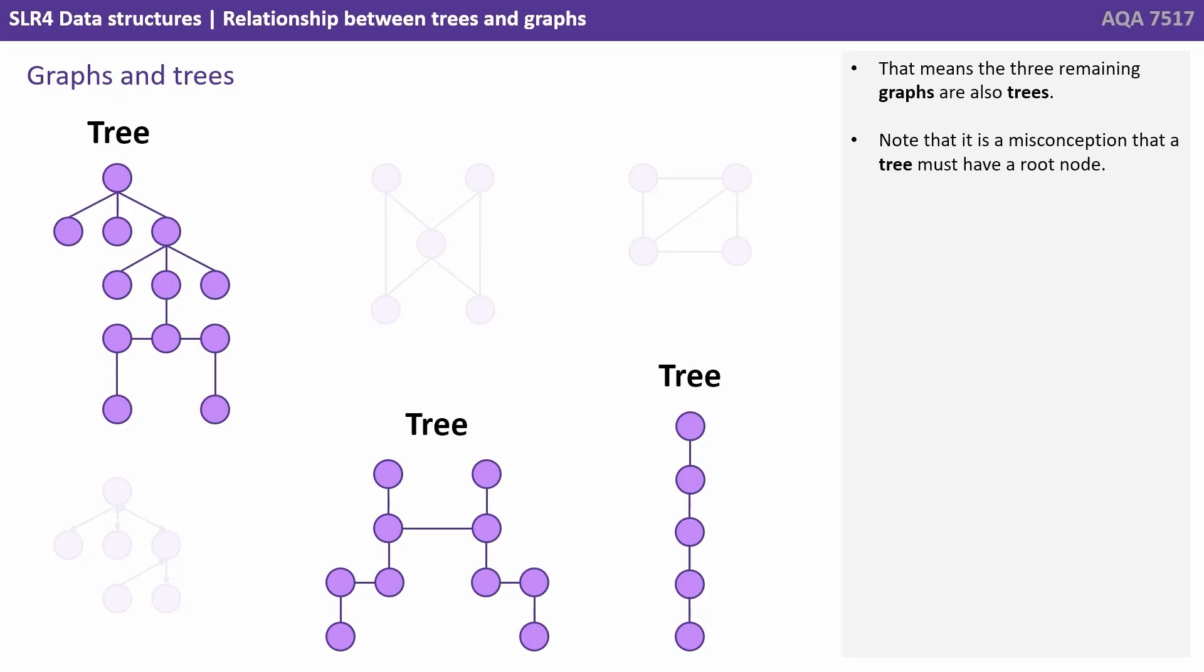That means that three of our remaining graphs can also be considered trees. Note that it's a misconception that a tree must have a root node.